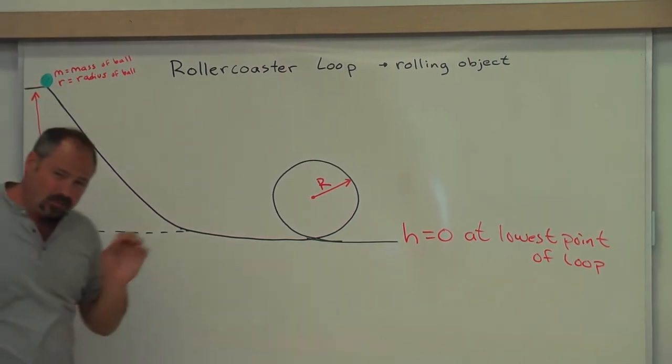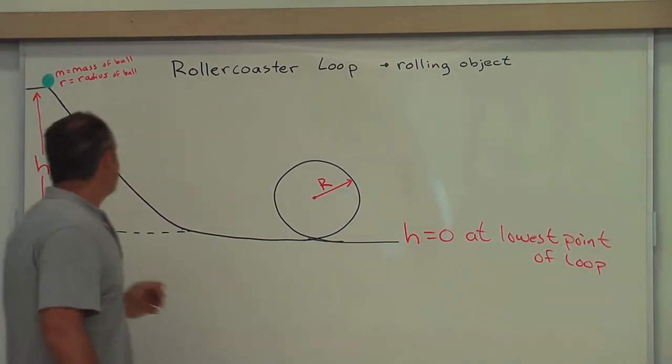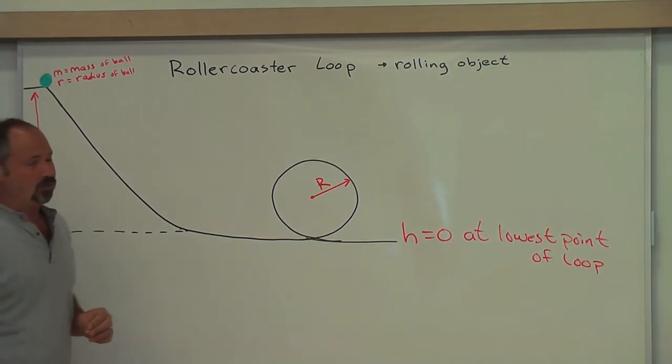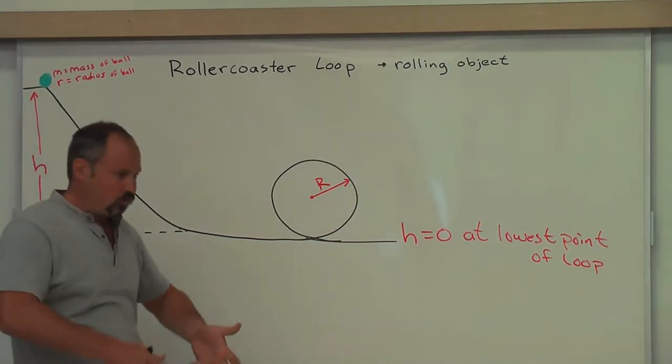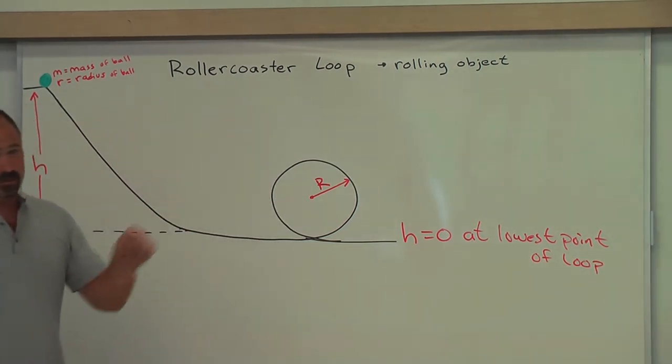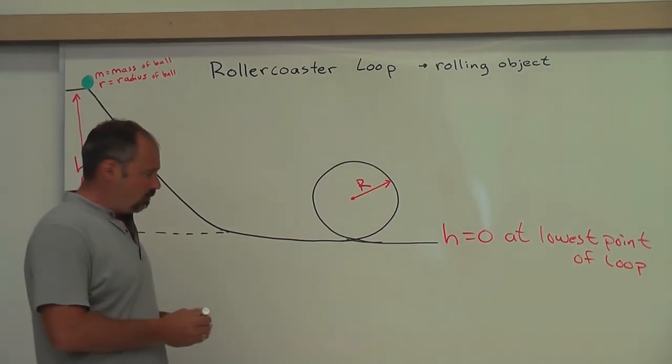Now this is different than the previous video because we're taking into account the rolling motion of the ball, and you can apply this to real roller coasters with wheels just by substituting in that moment of inertia. Let's solve the problem.